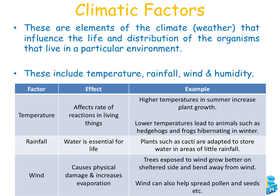Climatic factors are abiotic factors — elements of climate or weather that influence the life and distribution of organisms in a particular environment. Examples include temperature, rainfall, wind, and humidity. Temperature can affect the rate of reactions in living things: higher temperatures in summer increase plant growth, while lower temperatures cause animals such as hedgehogs and frogs to hibernate in winter, slowing their metabolism.